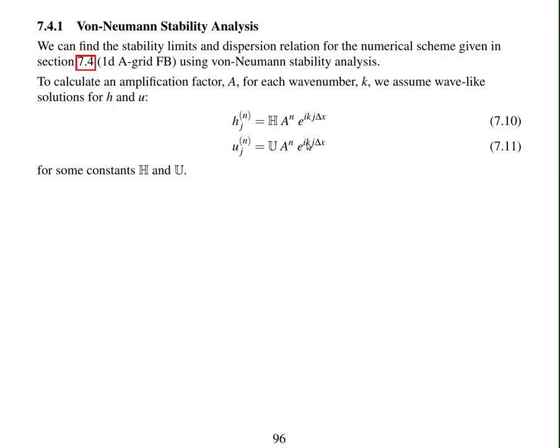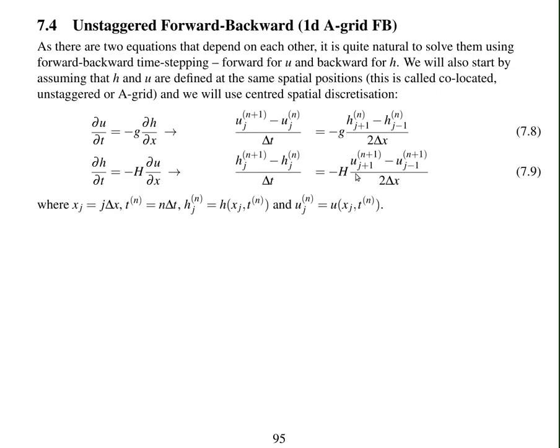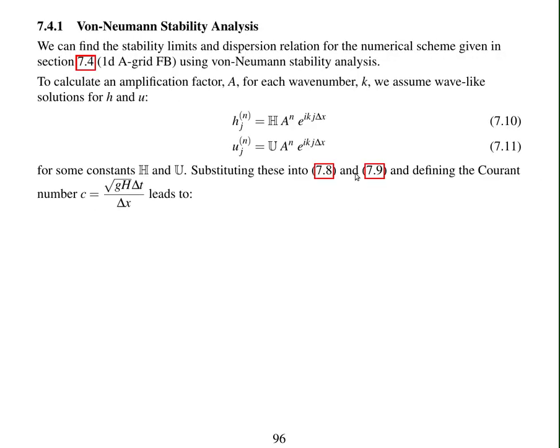A to the power n times e to the power i k j delta x for some constants H and U. You can substitute these equations into the equations of the numerical method. You can also define a Courant number c equals square root of gh times delta t over delta x. So this Courant number is based on the wave speed, rather than the fluid velocity.